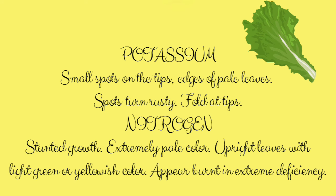In case of potassium deficiency, there are small spots on the tips, edges will be very pale, and these spots will turn rusty when the deficiency becomes extreme. Folds will appear at the tips of the leaves.